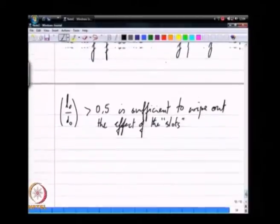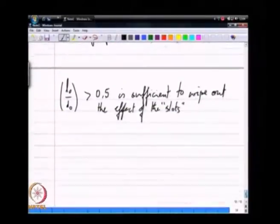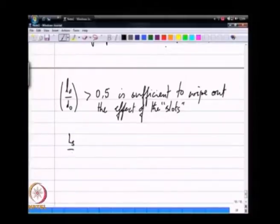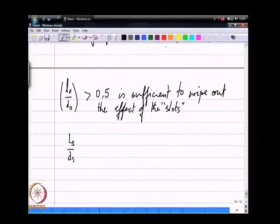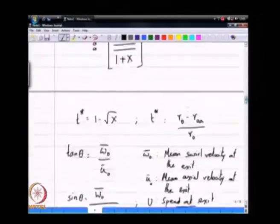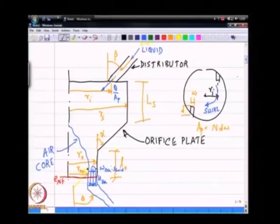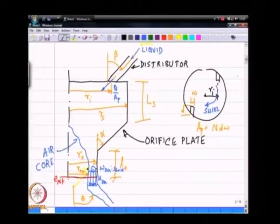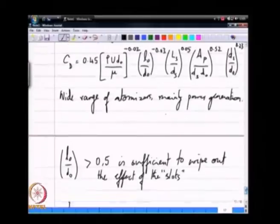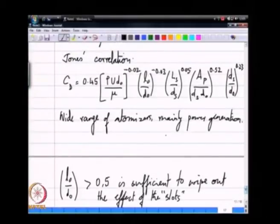Let us look at the other one which is Ls over Ds. If you go back this was our length of the swirl chamber divided by the diameter of that swirl chamber. As you can see from this correlation it really does not have much of an effect on the flow rate again, but it does have an effect again on the circumferential uniformity of the spray that you get.